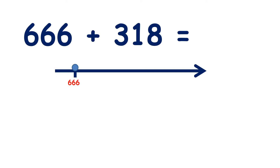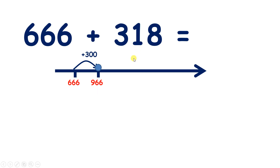Now pause the video and see if you can answer six hundred and sixty-six plus three hundred and eighteen. So if we add three hundreds to six hundred and sixty-six, that takes us to nine hundred and sixty-six, because six hundreds plus three hundreds gives us nine hundreds. Now if we add one ten, that takes us to nine hundred and seventy-six.